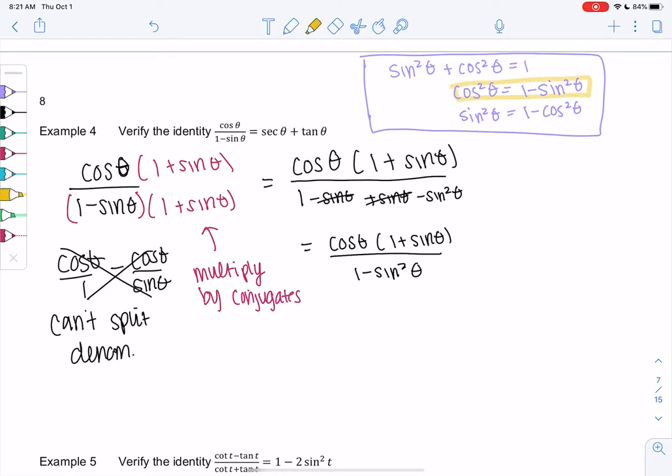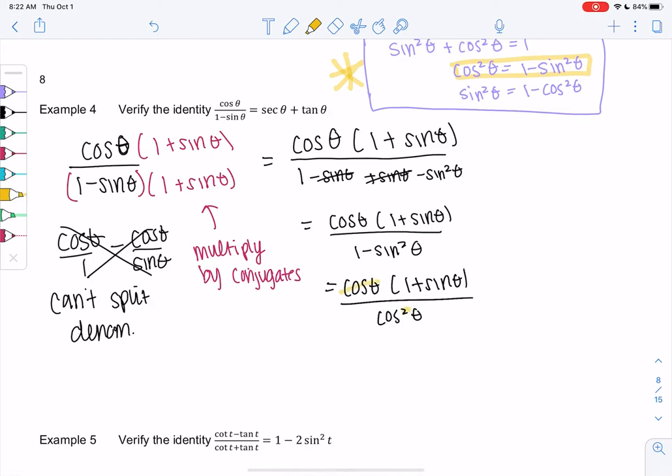One minus sine squared is cosine squared. We get cosine times one plus sine over cosine squared, which is helpful because now we have a single term on the bottom. Cosine and the power cancel out, so we get one plus sine over a single cosine.